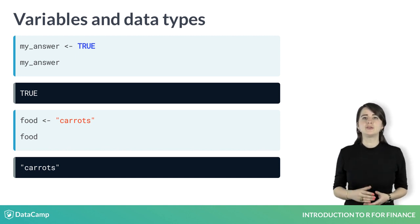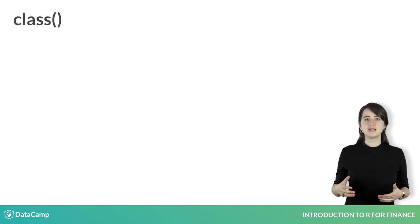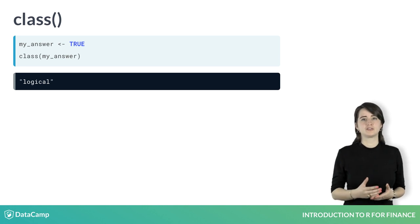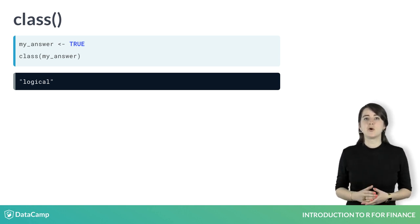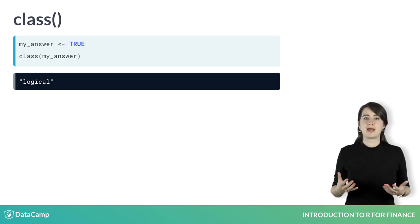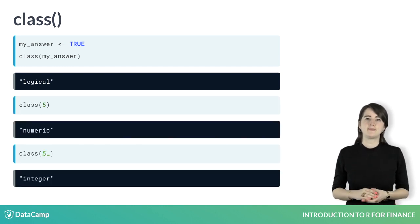Given a variable, you can use R to determine what data type it is using class. Using class on my_answer returns logical, telling you that the my_answer variable contains a logical data type. Class is what is known as a function. You will see a number of useful functions throughout the course. But for now, you can think of them as a black box where you pass in some kind of input, the function calculates some value, and presents it to you as output. You can use class to see the difference in type between the numeric and integer version of 5.